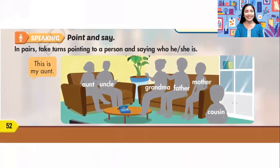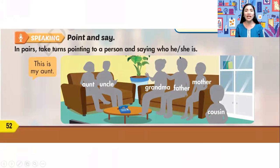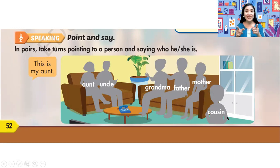Speaking part. Point and say. In pairs, take turns pointing to a person and saying who he or she is. Example: This is my aunt. Okay, let's start. I will do it first and then you do it yourself afterwards. This is my aunt. This is my uncle. This is my grandma. This is my father. This is my mother. This is my cousin.